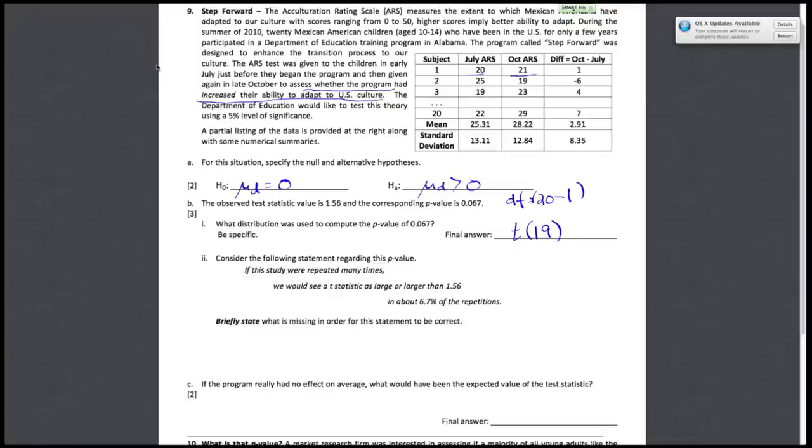All right, so for B part 2, they're asking you to consider the following statement regarding this p-value. So, if this study were repeated many times, we would see a t-test statistic as large or larger than 1.56 in about 6.7% of the repetitions. And they're asking you, well, what's wrong with this statement? This statement is missing one key element. When you're interpreting p-values, it is always, always assuming H0 is true. So, the part that's missing is assuming your null H0 is true.